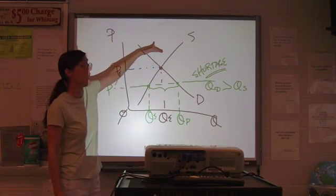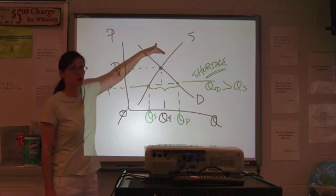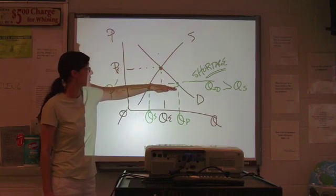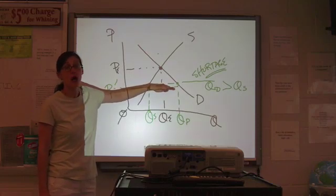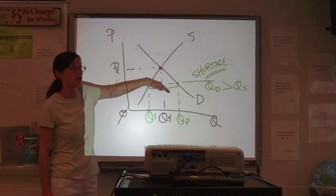So, surplus—price is too high. You've got too much stuff. If you want people to buy the too much stuff that you have, you make it cheaper. Shortage—your demand is too high. People want more than they can get. What naturally happens to price? The price rises.